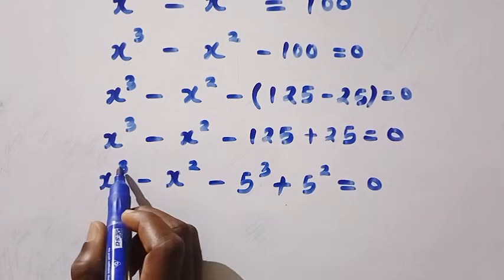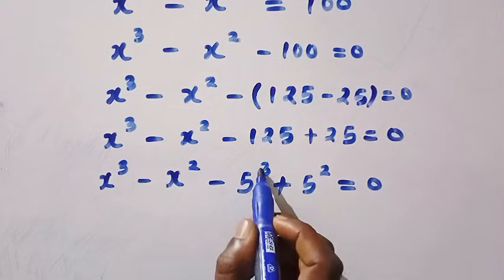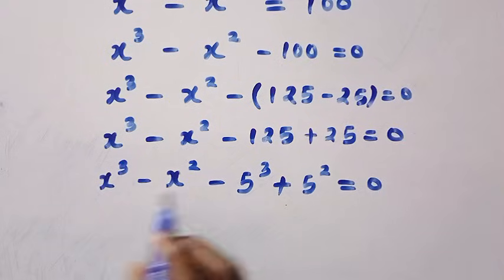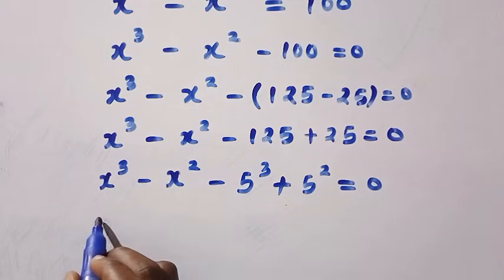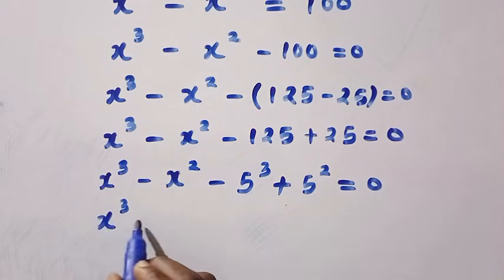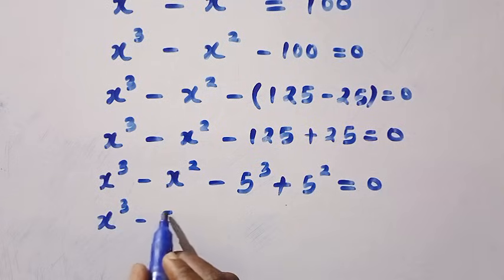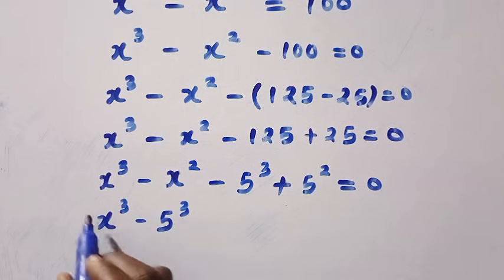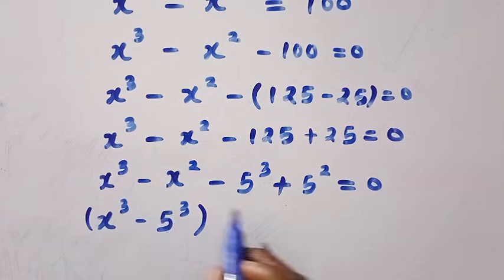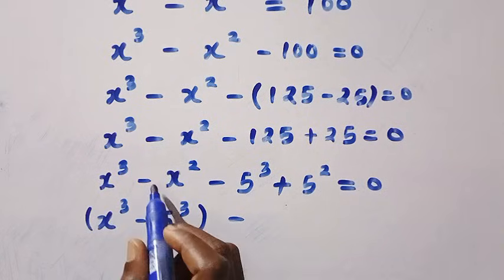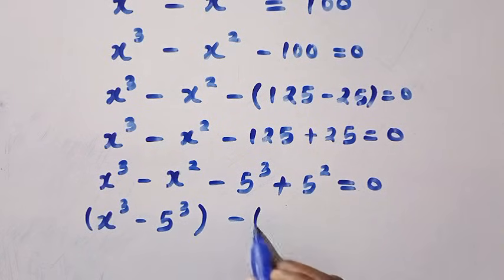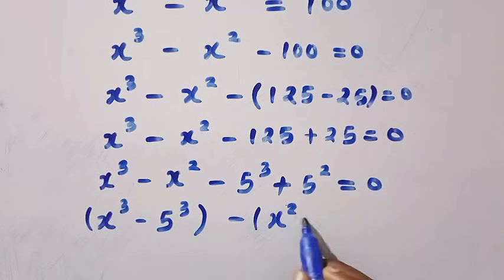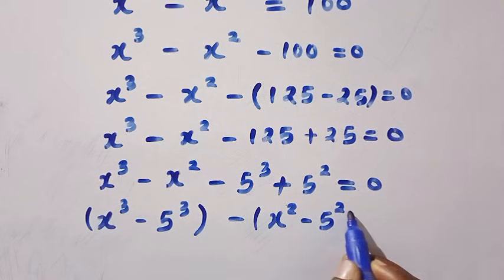We now group the terms with power 3 together and the terms with power 2 together. This gives us: open bracket x cubed minus 5 cubed, close bracket, then minus open bracket x squared minus 5 squared, close bracket, equals 0.